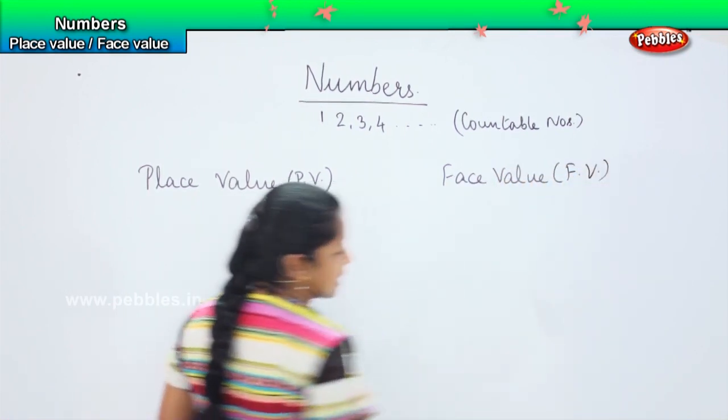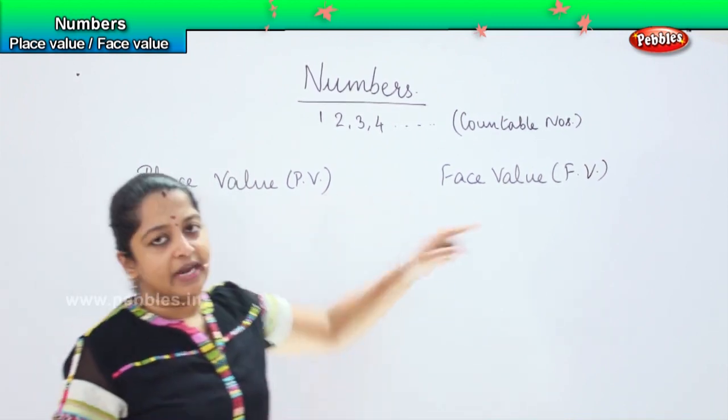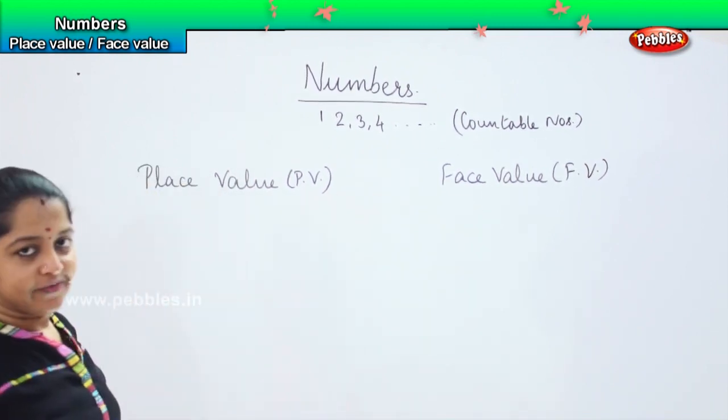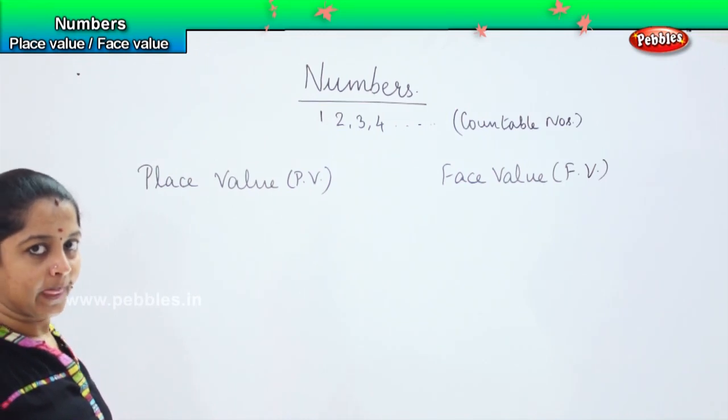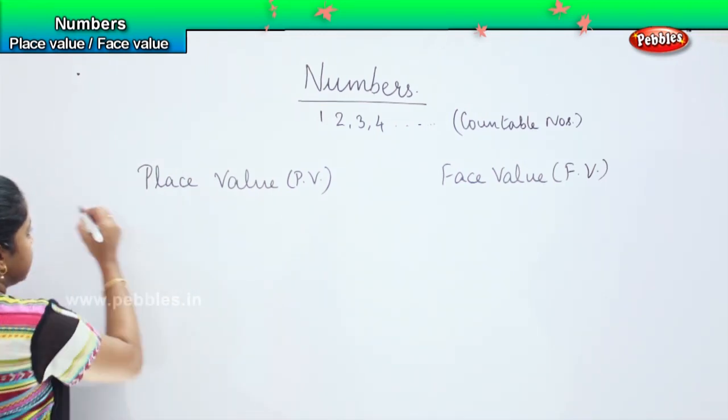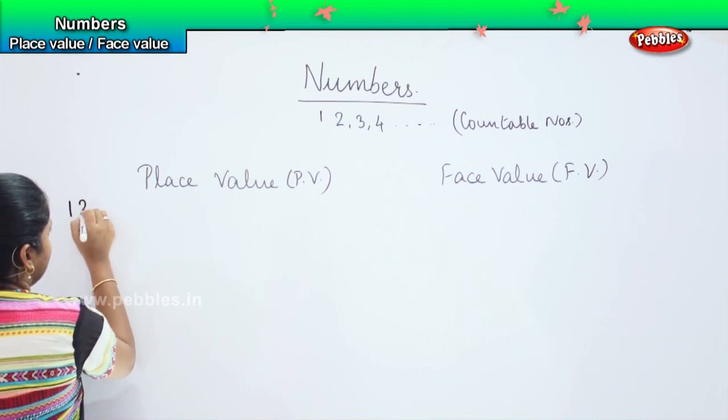So in this explanation, I will be using PV and FV so that it's easy for us to remember. Now, say for example, I write 135.